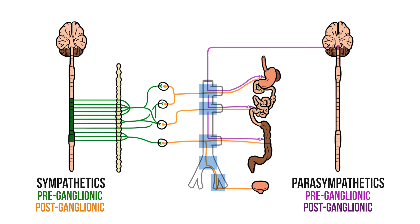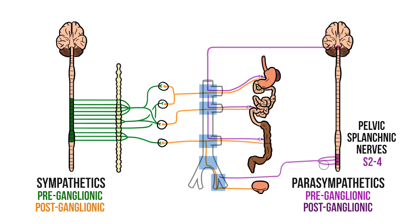Below this point, parasympathetic innervation is provided by the pelvic splanchnic nerves. Not to be confused with the thoracic splanchnics, these nerves carry parasympathetic fibres from S2, S3 and S4. The pelvic splanchnics start by entering the inferior hypogastric plexuses. From here, some fibres head medially and innervate the pelvic viscera, while others continue upwards until they reach the inferior mesenteric plexus, at which point they head out to innervate the distal portion of the hindgut.